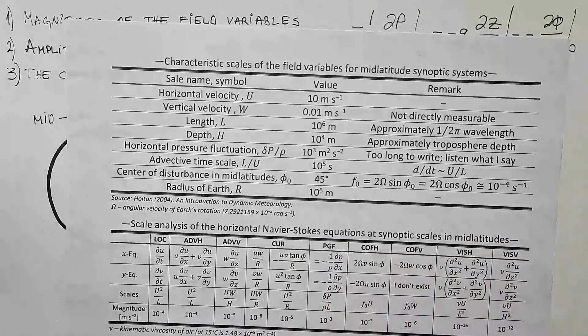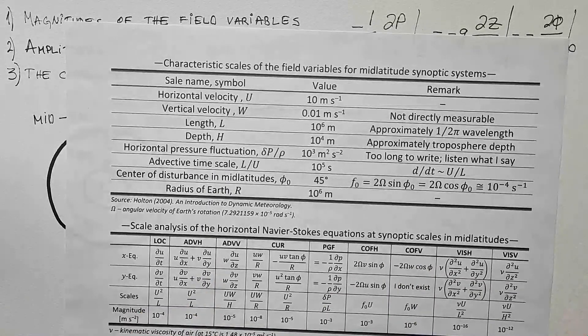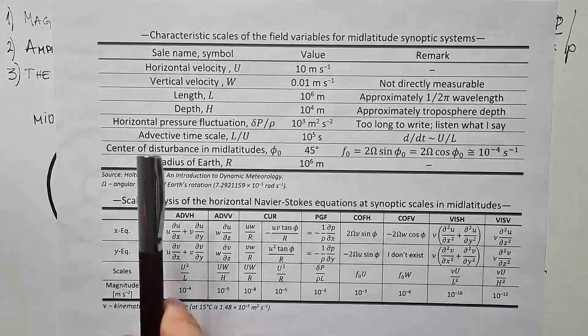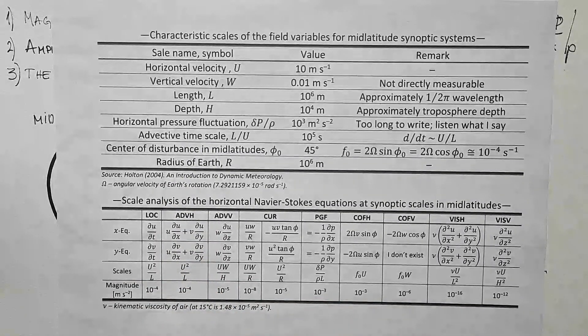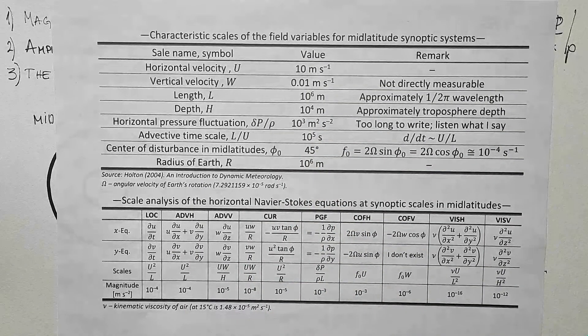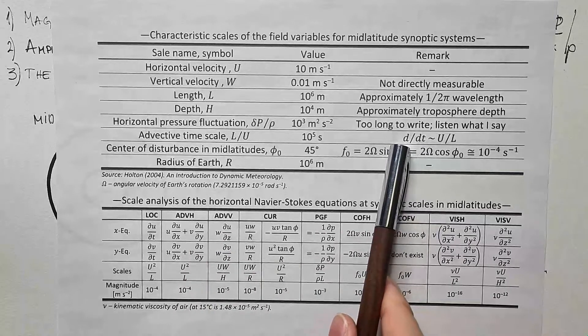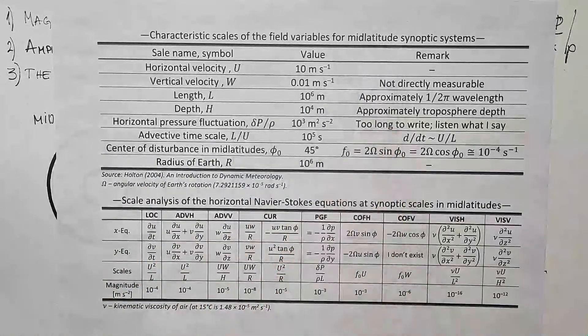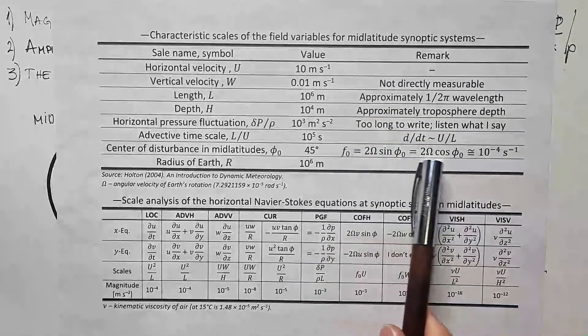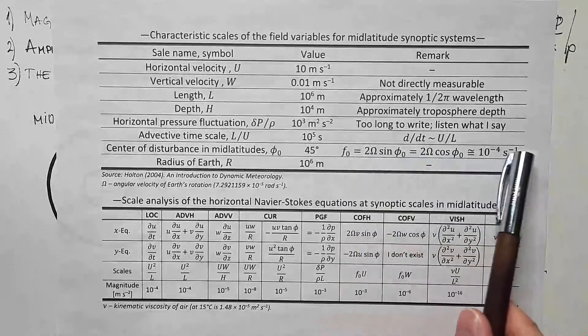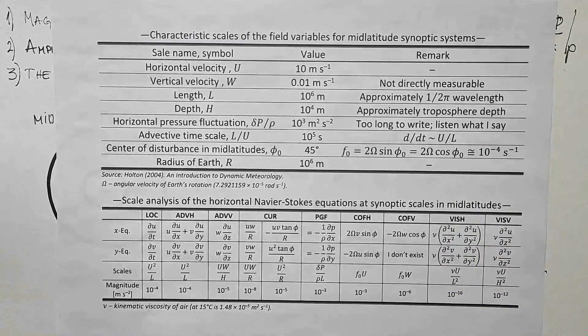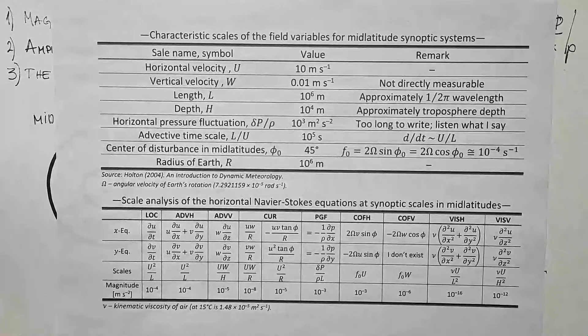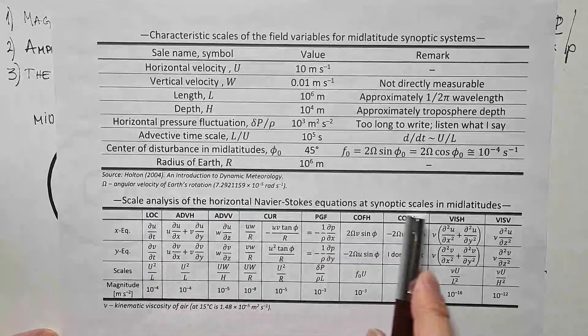Another scale variable is advective timescale, and advective timescale is the time required to travel this distance L if you have velocity U. An advective timescale is appropriate timescale for weather systems that move with the mean horizontal velocity U, which is typical for mid-latitude systems. This also means that differential operator d dt scales as this. And we will assume that center of our disturbance is in mid-latitudes, because we are interested in mid-latitudes, so let's say 45 degrees, and therefore Coriolis parameter and Coriolis parameter in the vertical direction are the same, and they scale as 10 to the power minus 4 Hz. And the radius of the earth, r, is 10 to the power 6 meters in terms of order of magnitude.